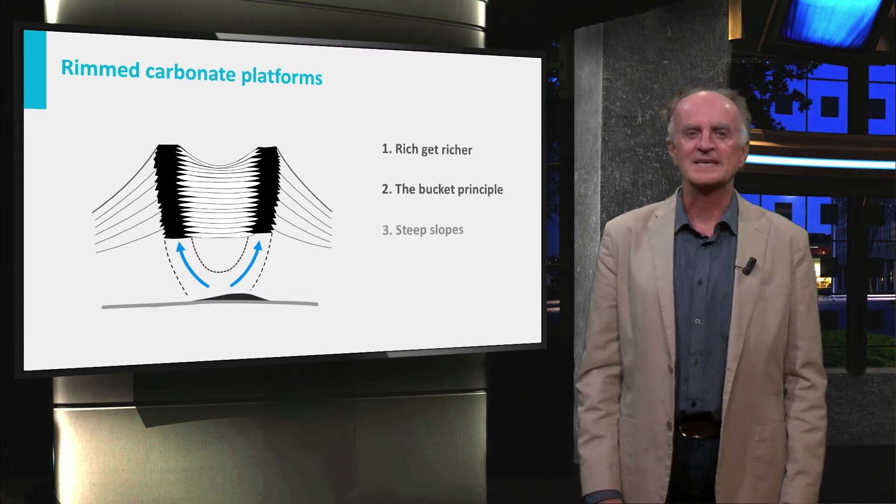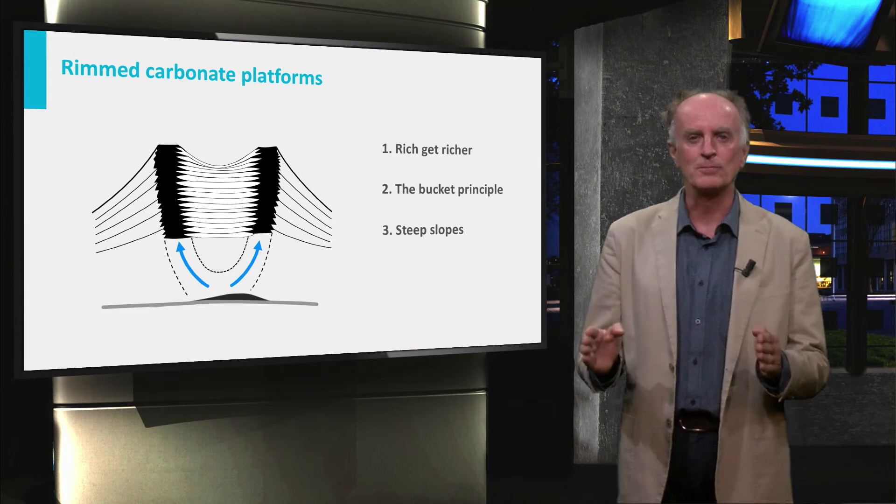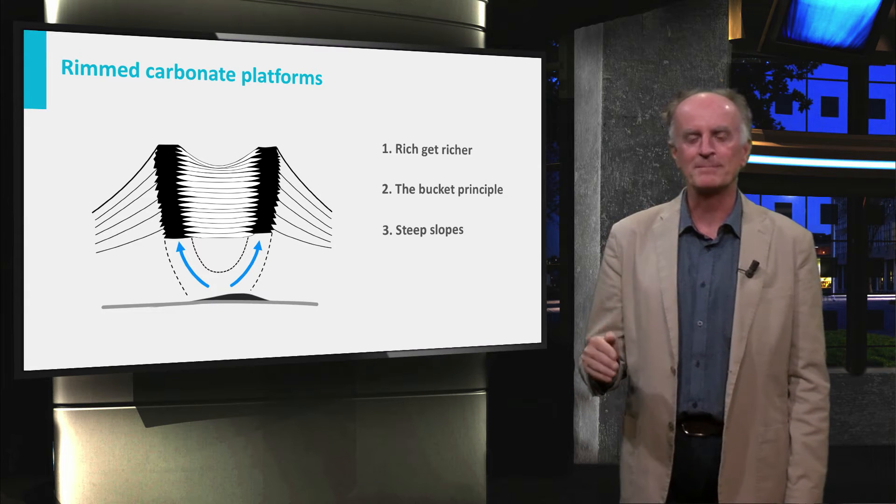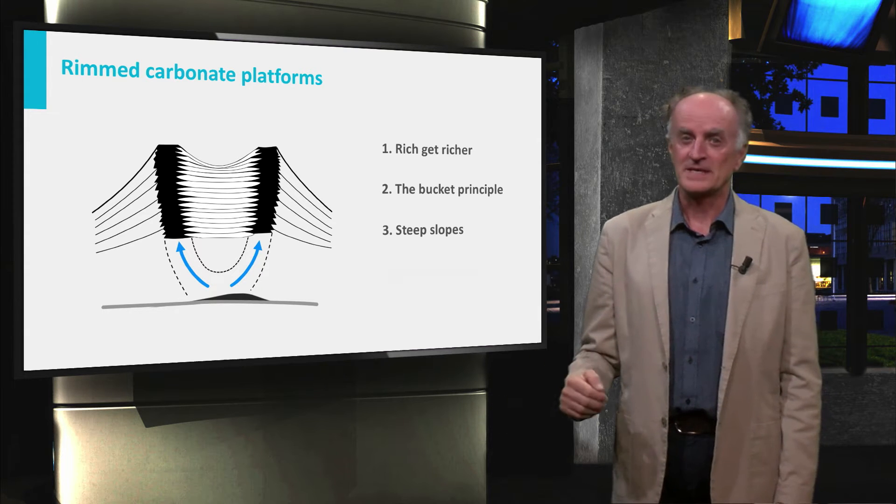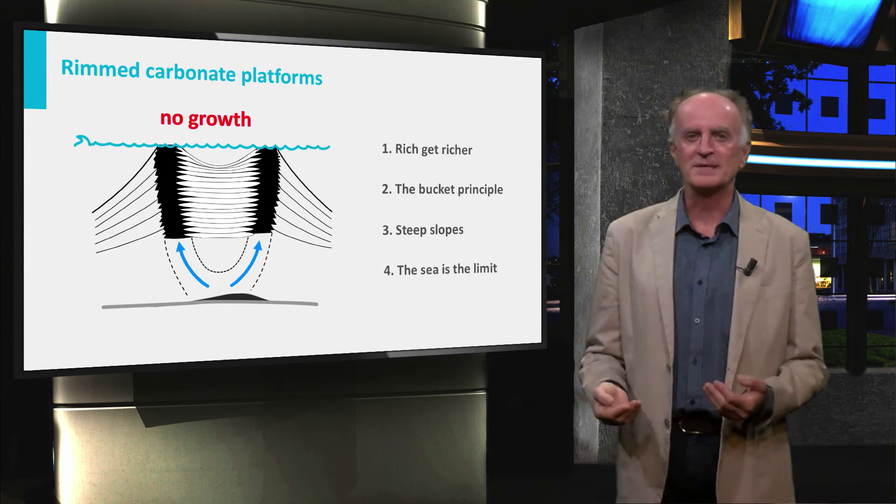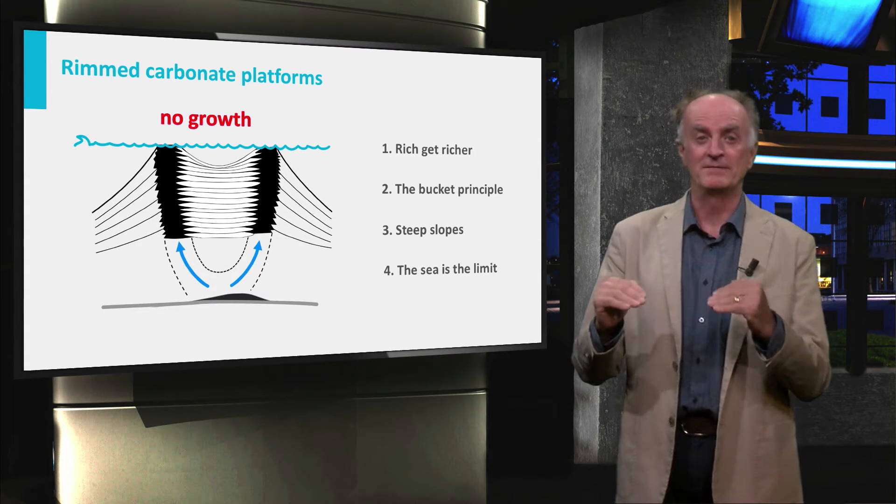Different from siliciclastic systems, carbonates are able to build very steep slopes, implying that a rim platform can laterally pass quickly to very deep waters. Because it is dependent on life, carbonate production is limited to the photic zone and cannot take place above sea level.